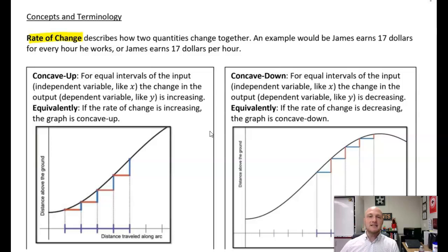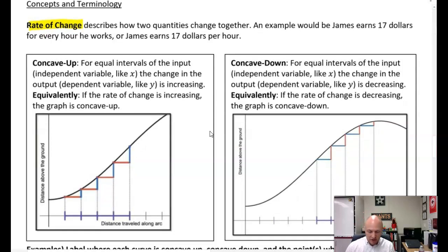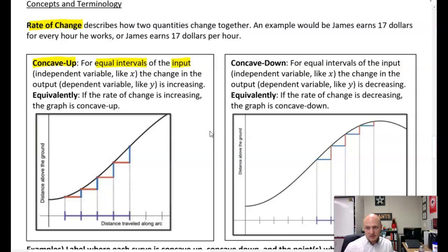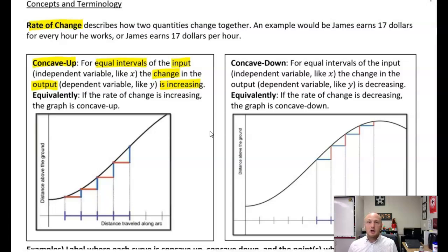Let's go ahead and tie in this idea of concavity. Concave up: a function is said to be concave up if, for equal intervals of the input — and it's very important that your inputs or the slices of time you're looking at have to be equal length input values — the change in the output is increasing. So the change in the output is increasing, and that would produce concave up. Equivalently, if that rate of change is increasing, the graph is concave up.